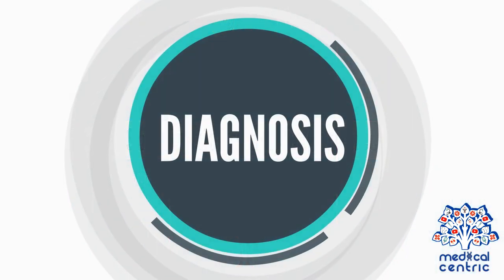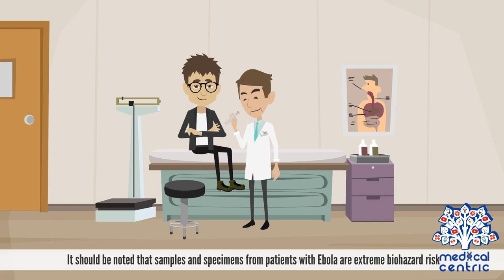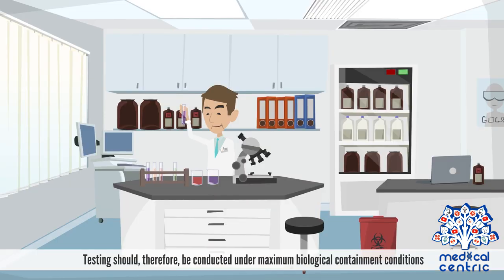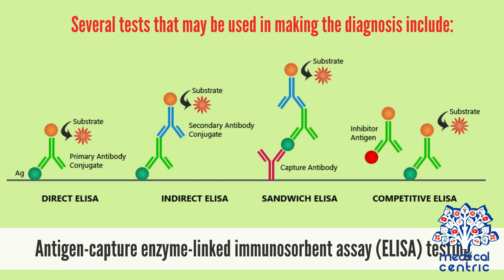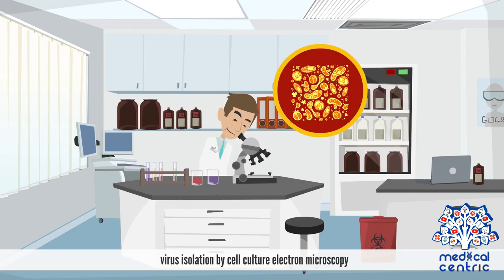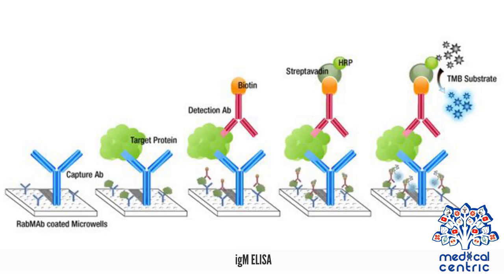To make a diagnosis, other conditions will first be ruled out. Samples and specimens from patients with Ebola are an extreme biohazard risk, and testing should be conducted under maximum biological containment conditions. Several tests used in making a diagnosis include antigen-capture enzyme-linked immunosorbent assay (ELISA) testing, virus isolation by cell culture, electron microscopy, polymerase chain reaction, and IgM ELISA.